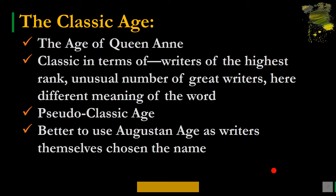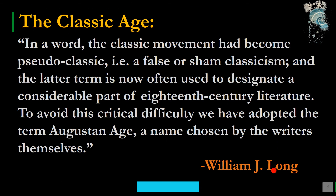This age is more accurately called a pseudo-classic or false classic age — it is not the same kind of classical age as Louis XIV's reign in French literature or Roman literature. Some scholars consider it better to use 'Augustan Age,' as the writers themselves chose that name. As the quotation states: 'The classic movement had become pseudo-classic — that is, a false or sham classicism — and this latter term is now often used to designate a considerable part of 18th century literature.'